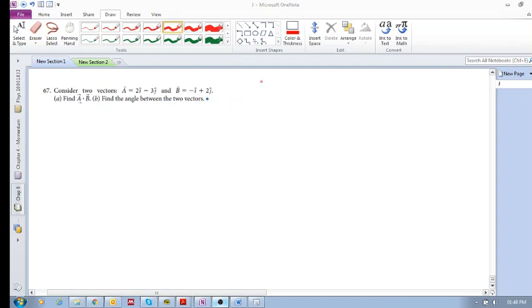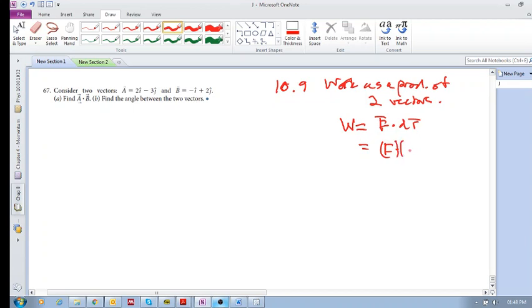Okay, so in the previous video, in this 10.9, we were looking at work as a product of two vectors. And what we saw was that work is then equal to the force vector dot the displacement vector. And we saw that this was equal to the magnitude of F times the magnitude of your, maybe this should be a delta R. Let me make that a delta R for now.